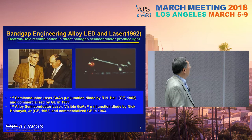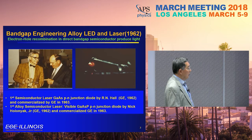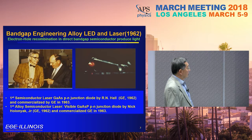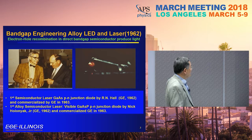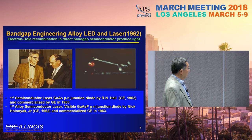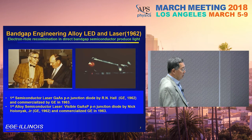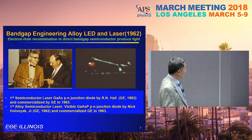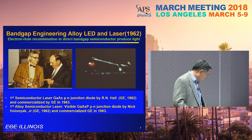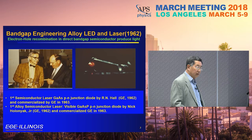Direct bandgap materials are the foundation of bandgap engineering, allowing LEDs to emit light from infrared to visible. The most important physics is that electron-hole recombination in direct bandgap semiconductors produces light instead of just heat. The first semiconductor laser was made at GE by R.N. Hall using GaAs and a PN junction, commercialized in 1963, immediately followed by the LED. The first alloyed semiconductor laser was also demonstrated months later by Nick Holonyak Jr. in 1962, leading to commercial LEDs in 1963.